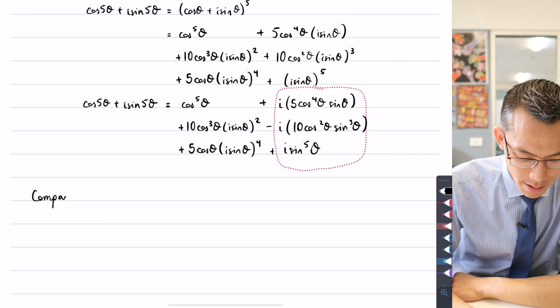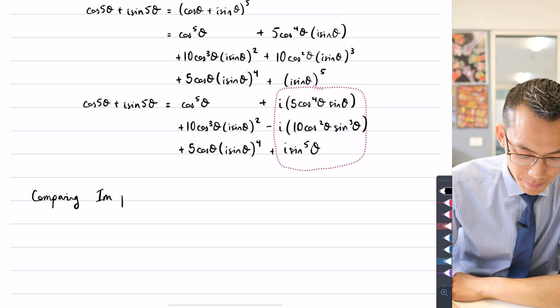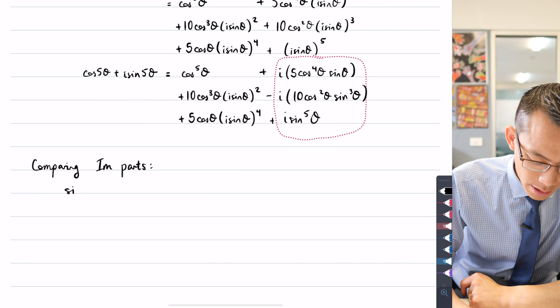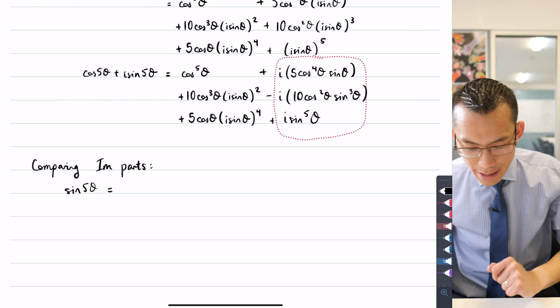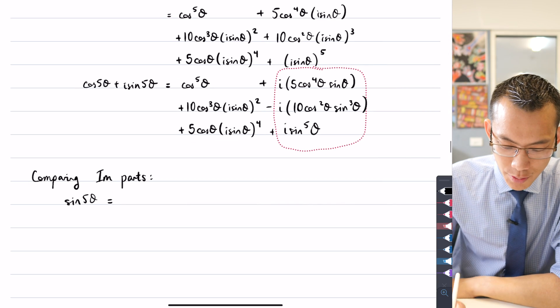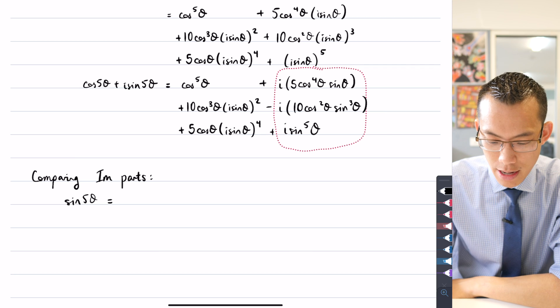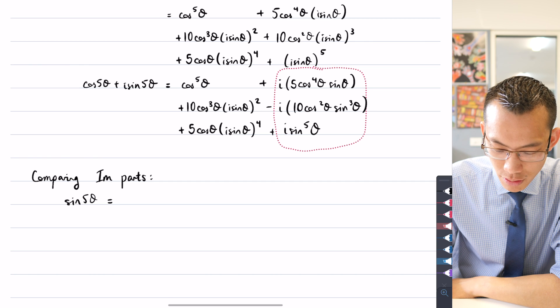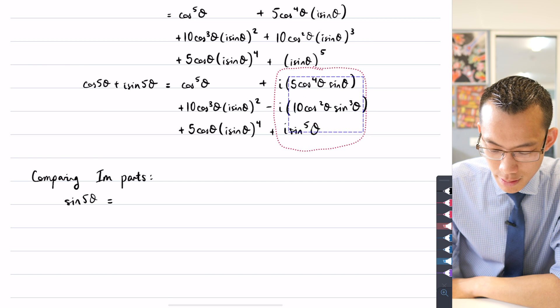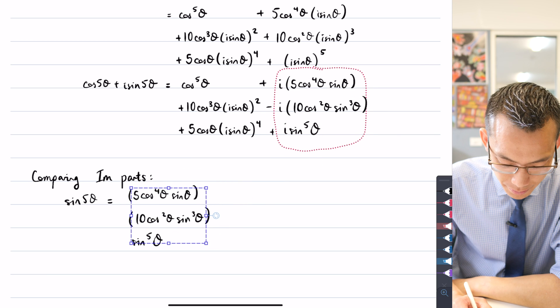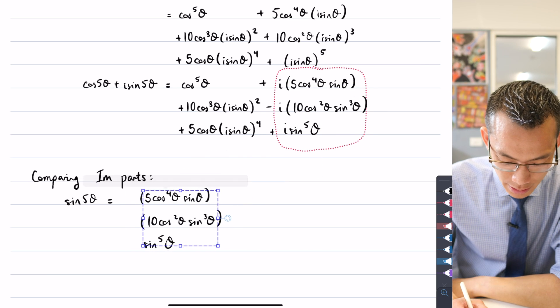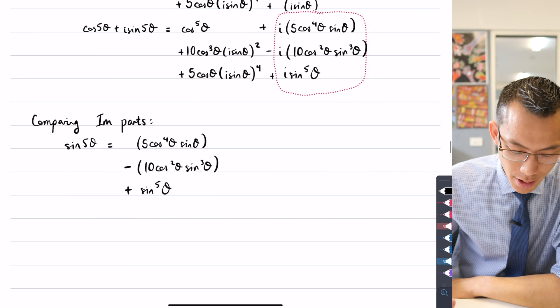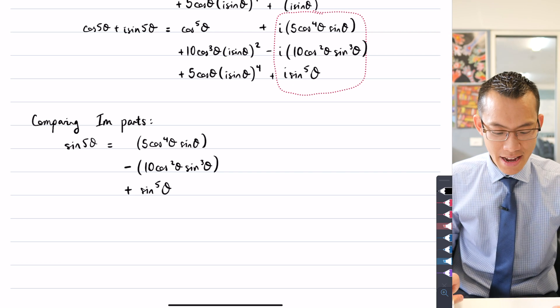So what I've got now, you can clearly see if I sort of drag this along, you can clearly see that these terms here are all imaginary. So I've got this part over here. And so now I'm going to do my comparison of imaginary parts. So comparing the imaginary parts. What am I going to get? Well, on the left hand side, I've got sin 5θ. And then on the right hand side, you can see I'm just going to have all of those terms that I circled in red just over here. And so I'm just going to grab them. I'm just going to copy them down, except I don't need the i's.